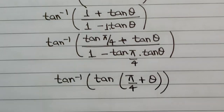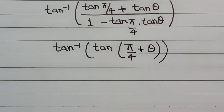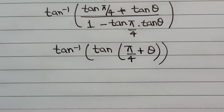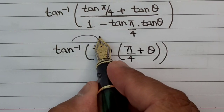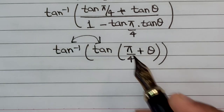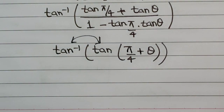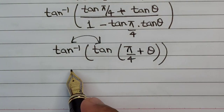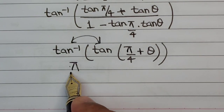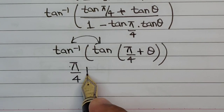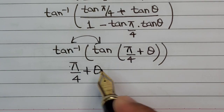Since tan inverse and tan cancel each other out, we are left with π/4 + θ. But the job is not done yet — we still need to replace θ in terms of x.